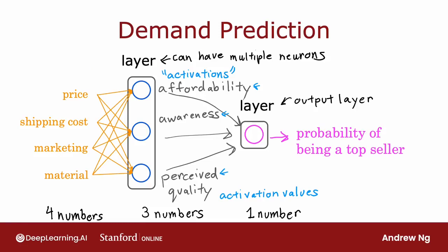You can imagine that if you're trying to predict affordability and it knows the price, shipping cost, marketing, and material, maybe you'll learn to ignore marketing and material, and just figure out, through setting the parameters appropriately, to only focus on the subset of features that are most relevant to affordability.